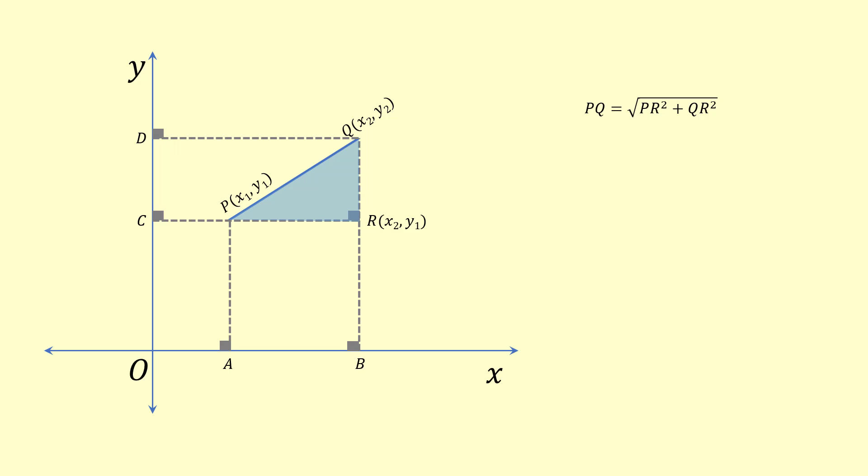Observe that qr is equal to qb minus rb, which is equal to y2 minus y1. And pr is equal to cr minus cp, which is equal to x2 minus x1.